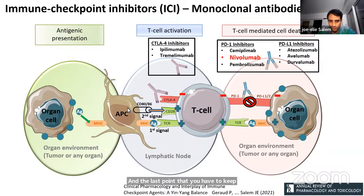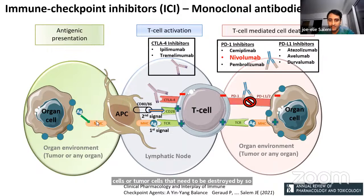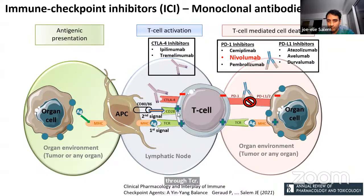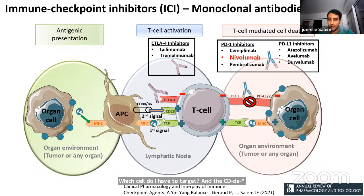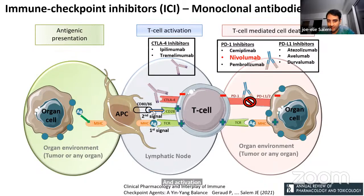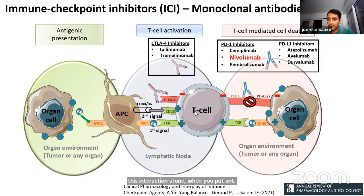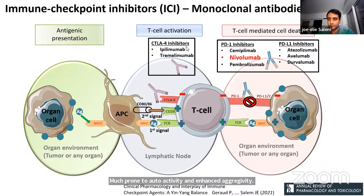Antigen presenting cells like monocytes are here to track and identify cells that need to be destroyed by T-cells. They present antigens through the TCR to identify who the T-cell should kill. To be activated, you need a second signal: the antigen identifies the target, and the CD80/CD86–CD28 interaction says 'you can now kill it.' CTLA4 impedes this interaction, so when you give anti-CTLA4, this second signal interaction is facilitated and T-cells become much more prone to auto-reactivity and enhanced aggressivity.